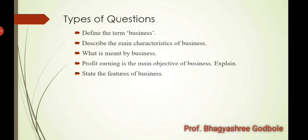Now let us see what types of questions can be asked on this topic. The first is: define the term business — here we can write any definition from the textbook. The next is: describe the main characteristics of business — when asked to explain characteristics, features, or the nature of business, we write the features we just studied. Another question is: what is meant by business — write the meaning in simple words. Lastly: profit earning is the main objective of business, explain — here focus only on the profit-earning feature and explain that particular point.